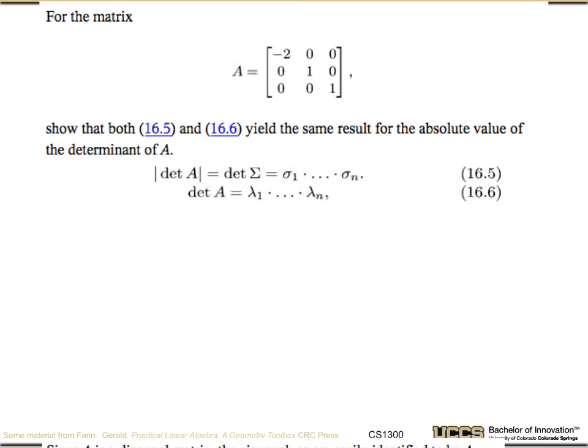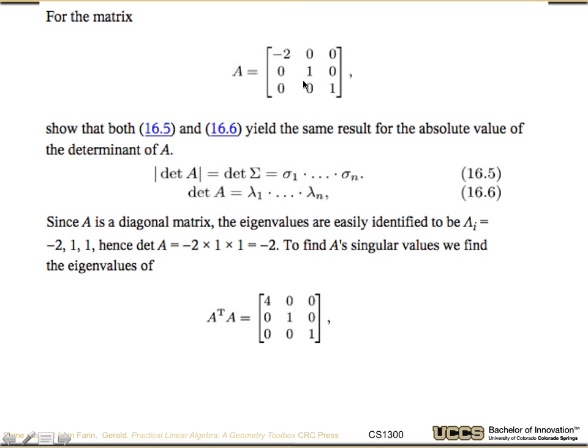Okay, so hopefully you've worked that out. Since A is a diagonal matrix, this is really easy to get its eigenvalues. It's just -2, 1, 1. So the determinant, according to 16.6, is -2 times 1 times 1 is -2.